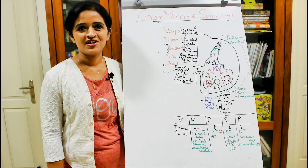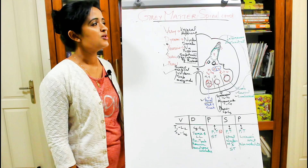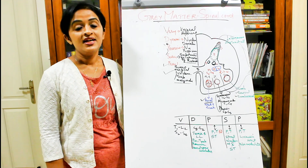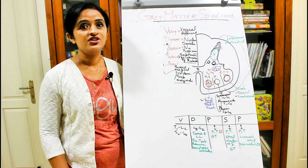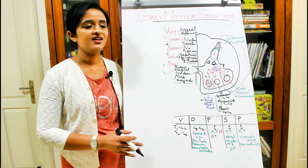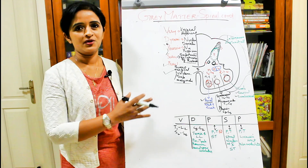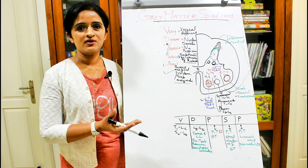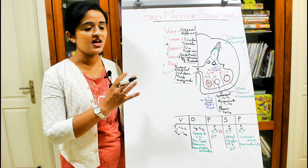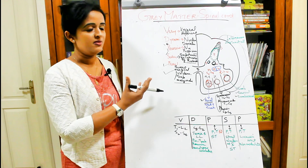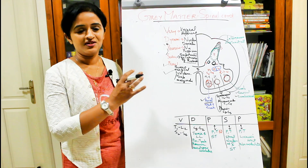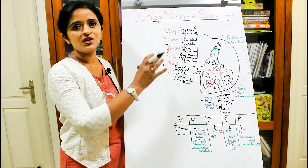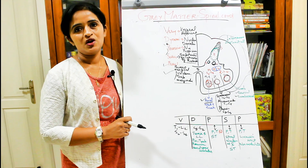Hello everyone, welcome back to my channel. This session is actually a continuation of the internal features of the spinal cord — the gray matter and the posterior horn. In the previous session I covered the details of the anterior horn and the intermediate region of the gray matter. Now we are going to the posterior horn of gray matter.